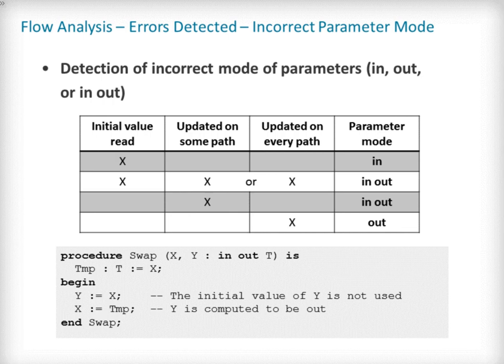Parameter modes influence the behavior of the compiler and are a key point for documenting the usage of a sub-program. Flow analysis will check that specified parameter modes always correspond to their usage in the sub-program's body. More precisely, it will check that an IN parameter is never updated either directly or through a subsequent sub-program call, and that the initial value of an OUT parameter is never read in the sub-program as it may not be copied on sub-program entry. Finally, flow analysis will also warn when an IN-OUT parameter is not updated or when its initial value is not used, as it may be the sign of an error. An example is shown in the sub-program called swap. Note that in SPARK, a parameter which is read but not updated on every path should be declared as IN-OUT, as its final value may depend on its initial value.